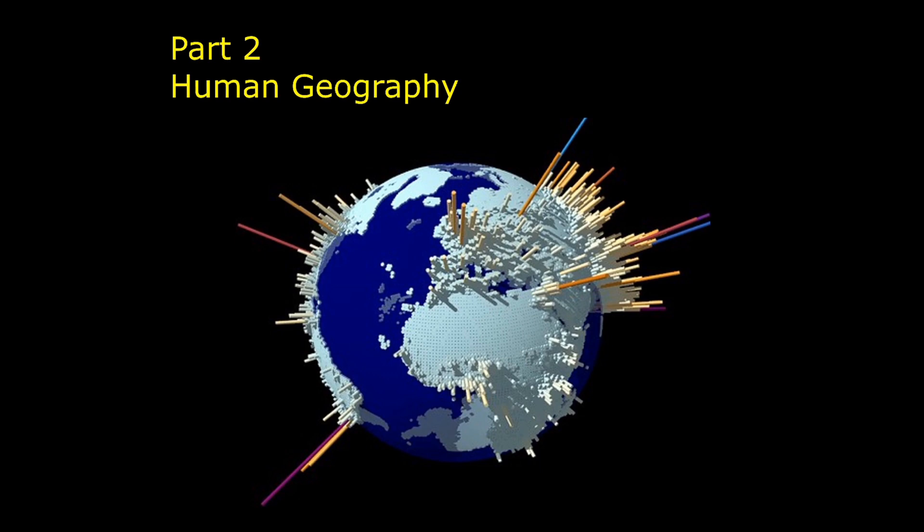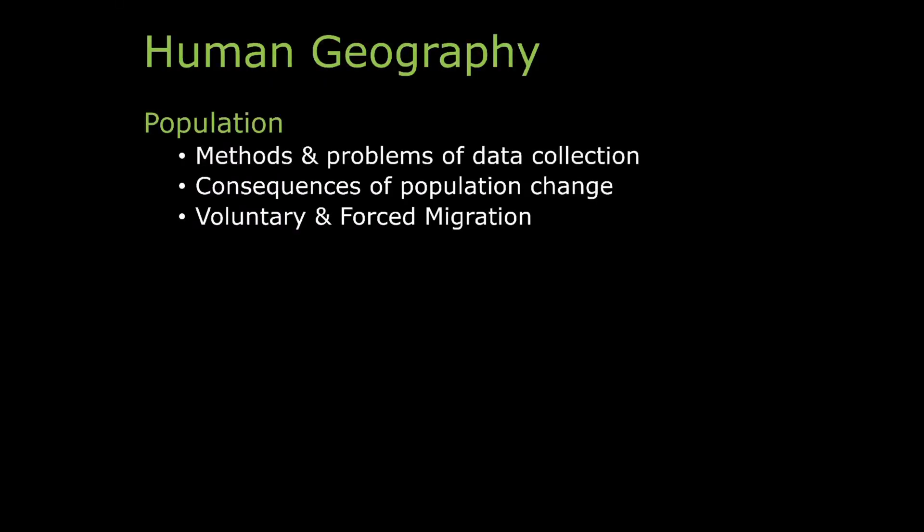Part two is Human Geography, made up of population - moving on completely from what we looked at at National 5. Methods and problems of data collection are involved, how we actually get that information. The consequences of population change - what happens if we've got a rapidly growing or a slowly declining population. And voluntary and enforced migration - the consequences if a war starts and people need to move, or if large numbers of people choose to move to a different location, the reasons these happen and what happens when they get there.